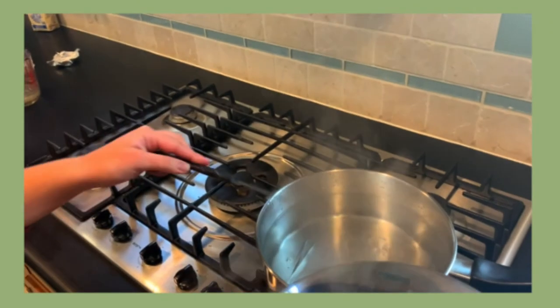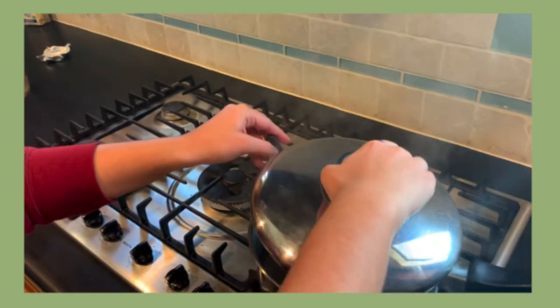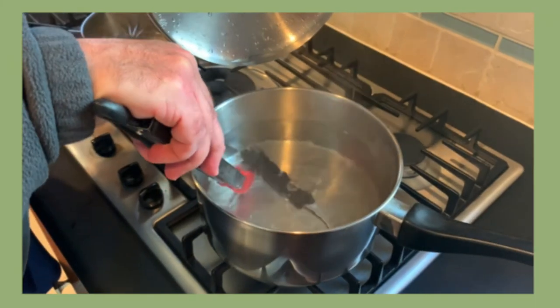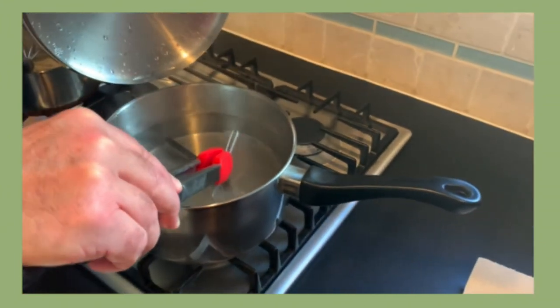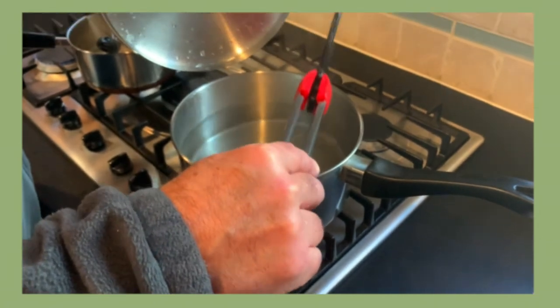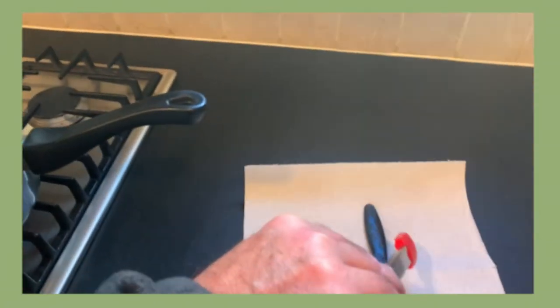Set another pot filled up 3 fourths of the way with water to boil. Place the knife, poker, and tweezers into the water. Let sit for 20 minutes and then remove with tongs. Place all materials onto a paper towel and then cover it with another paper towel to keep clean.